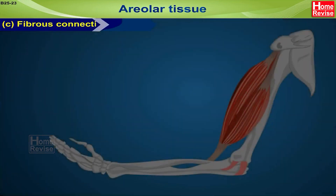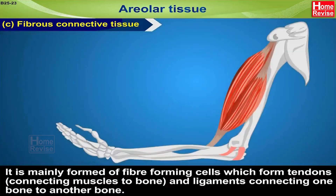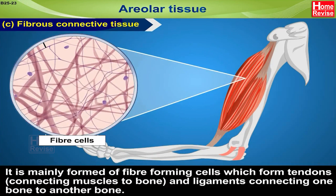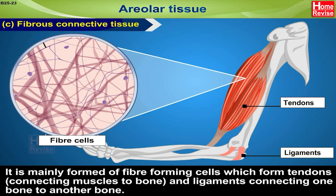C. Fibrous connective tissue: it is mainly formed of fiber-forming cells which form tendons — connecting muscles to bone — and ligaments, connecting one bone to another bone.